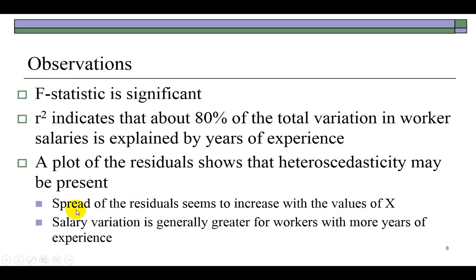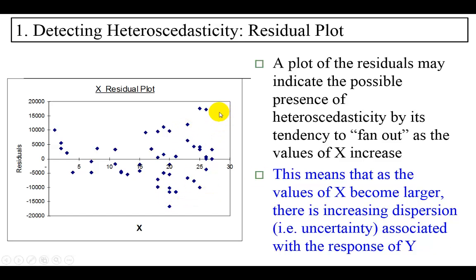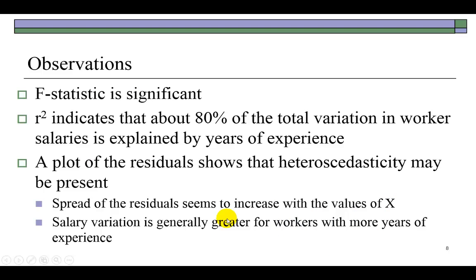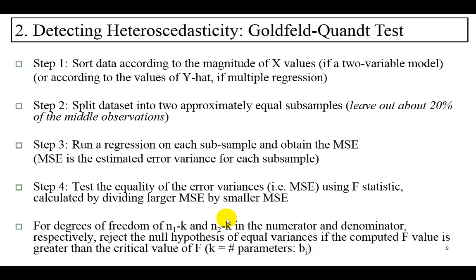And I conclude here that the spread of the residuals seems to increase with the values of X, meaning that salary variation is generally greater for workers with more years of experience, as you can see right here. Someone out here makes little money, someone out here makes a lot of money, given the same very high years of experience.